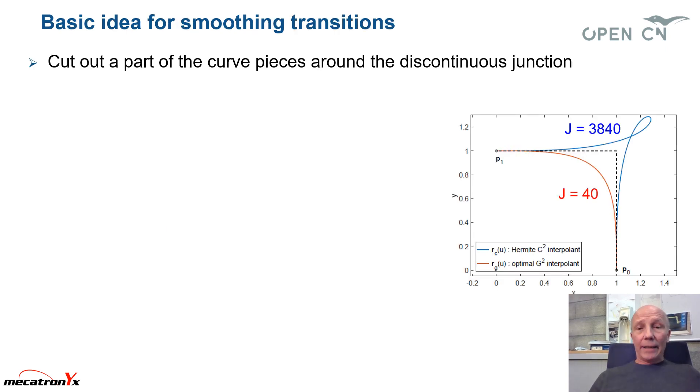So the basic idea is the following. We are cutting out a part of both pieces around the discontinuity, which is here. So we are cutting out this dashed part here, this dashed part here. And we are replacing the missing parts by a new curve, which we call a completion, a curve completion. Completion in such a way that we have a G2 continuity here at P0 and here at P1.